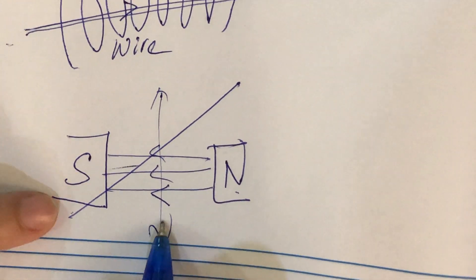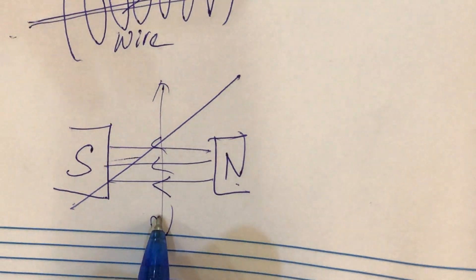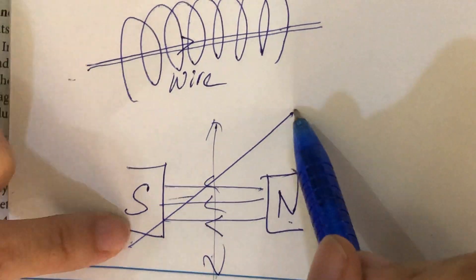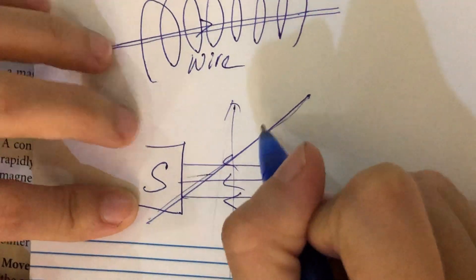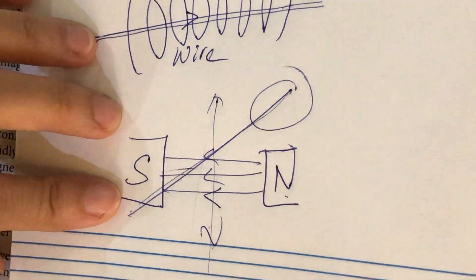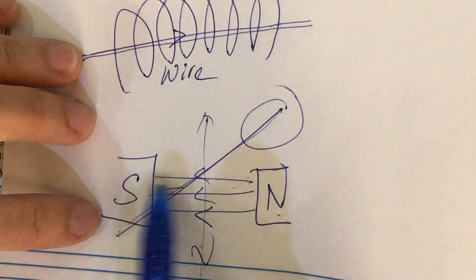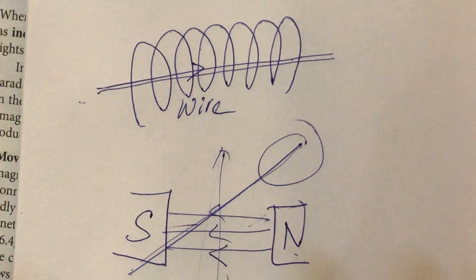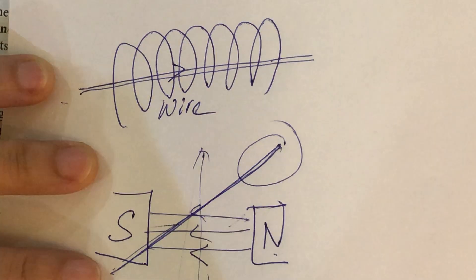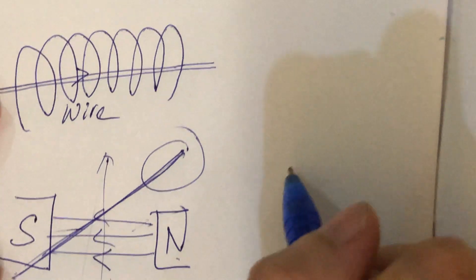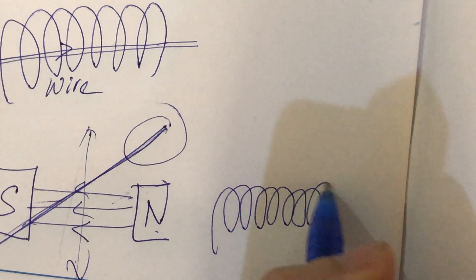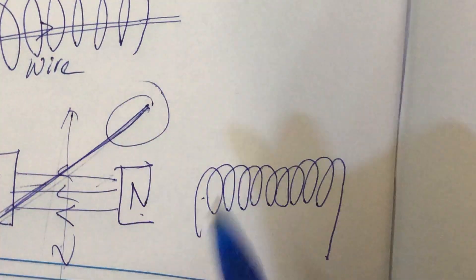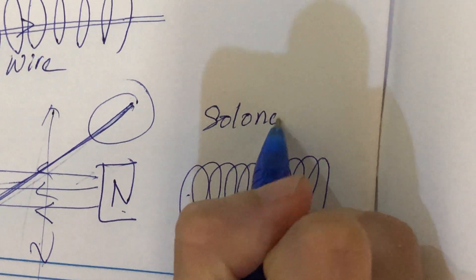We cannot see the magnetic flux line, but we know that it exists. We can test it by using a compass — put a compass between the north pole and south pole, and it will point towards the south pole. So when we use this wire to cut across the magnetic flux line, it will actually produce current in this wire. The magnetic field will exist as a force and push electrons in the wire to move around — that's how we generate electricity. Of course, one wire is not enough, so instead of one wire, we prefer a whole loop of wire — we call it a solenoid.